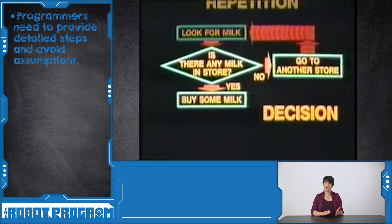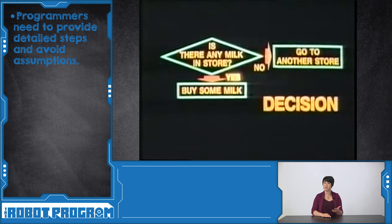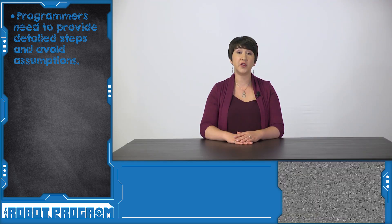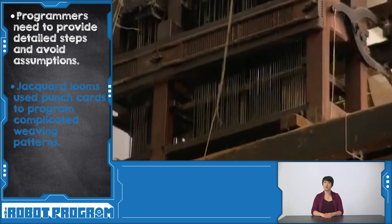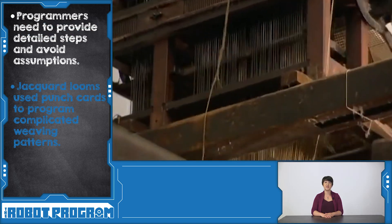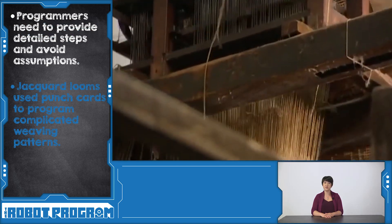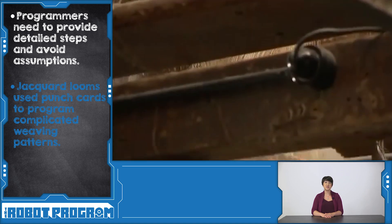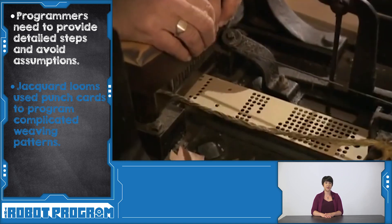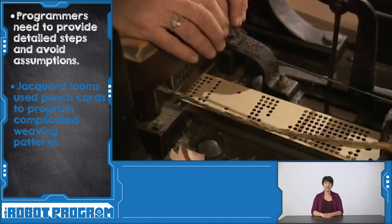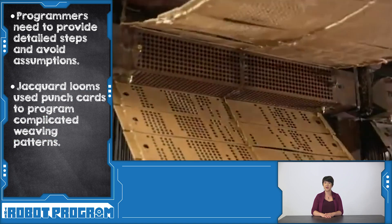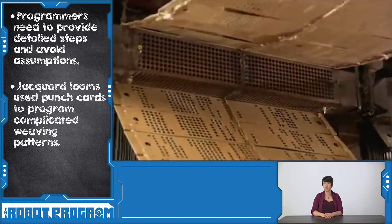But how do computers understand what we type? To understand that, we have to go back and look at early forms of computers. The first device that could be programmed to follow a set pattern of instructions was actually the Jacquard loom, first demonstrated in 1801. This machine used paper cards with holes punched in them to determine what pattern should be woven on a loom.